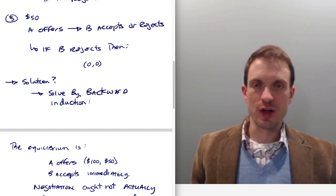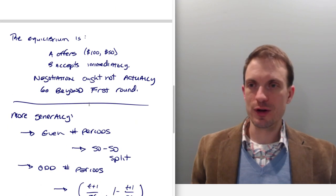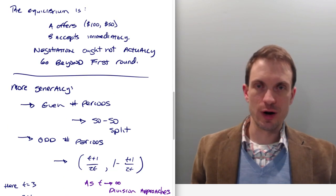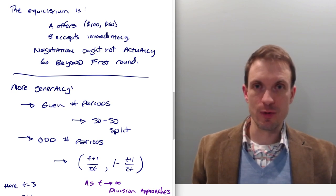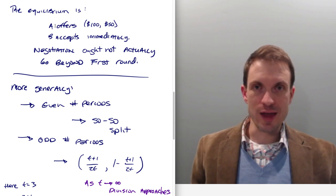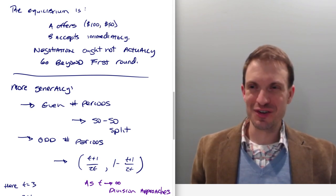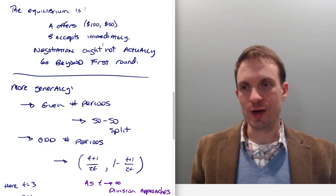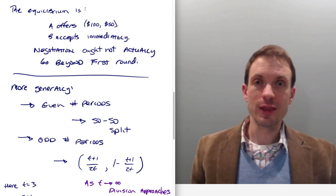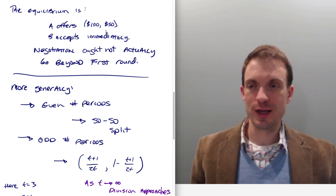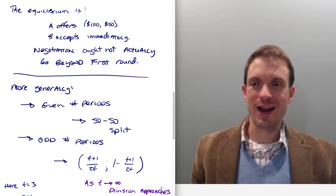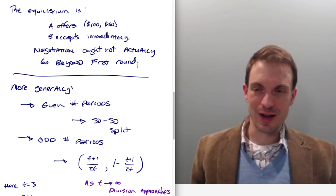So the solution is, let's solve this thing by backward induction. So use some tools from game theory to work backwards to think of where the subgame perfect Nash equilibrium will be. The equilibrium in this game is actually for A to offer $100 to themselves and $50 to B. And as part of the equilibrium, we're concluding that B is going to be accepting immediately. Negotiation ought not actually go beyond the first round in equilibrium.